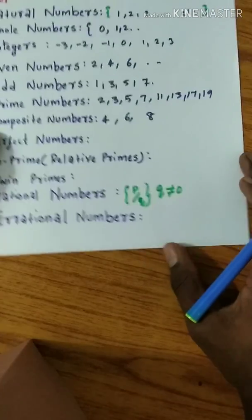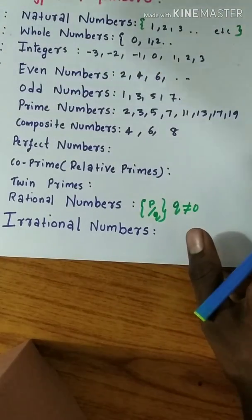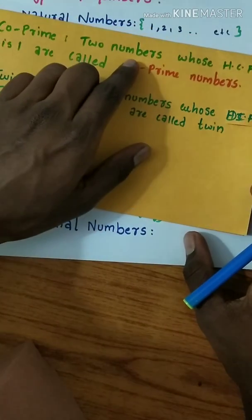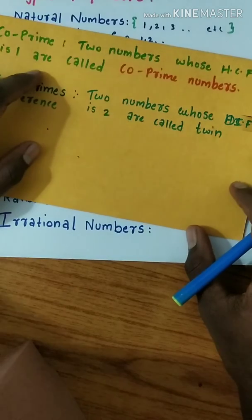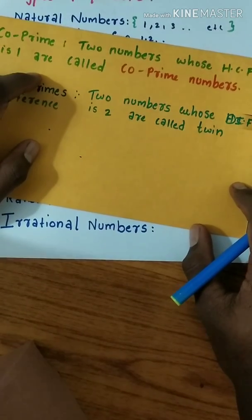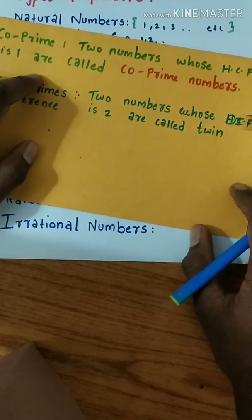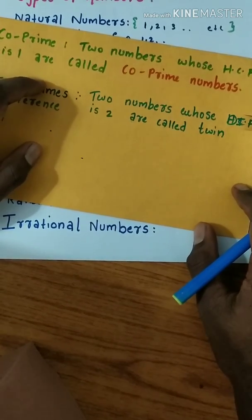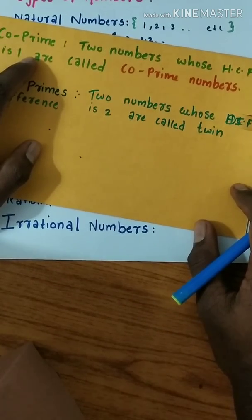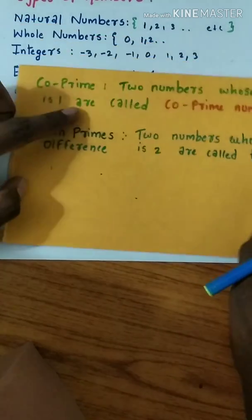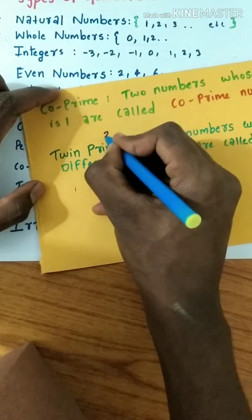Co-prime numbers - numbers whose HCF is 1 are called co-prime, also given the name relative primes. Examples: (2, 3) and (8, 9).